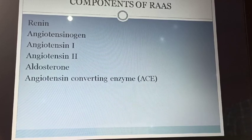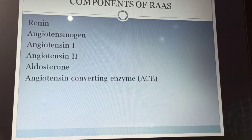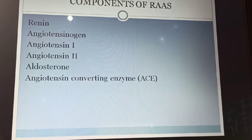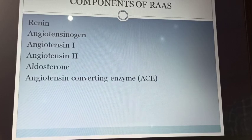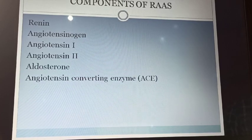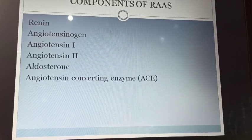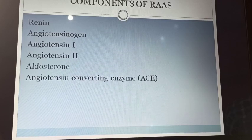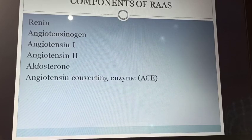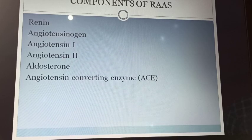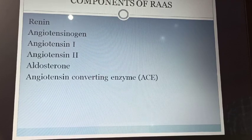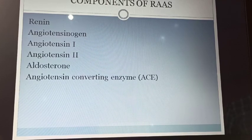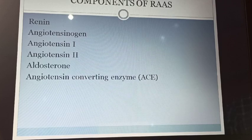Renin is an enzyme which is produced by the kidney. Then angiotensinogen — it is a plasma protein which is synthesized in the liver, the largest organ in our body. Then angiotensin-1, it is a peptide produced by the action of renin. Then angiotensin-2 — it is a potent vasoconstrictor, a peptide hormone that causes vasoconstriction and increase in blood pressure.